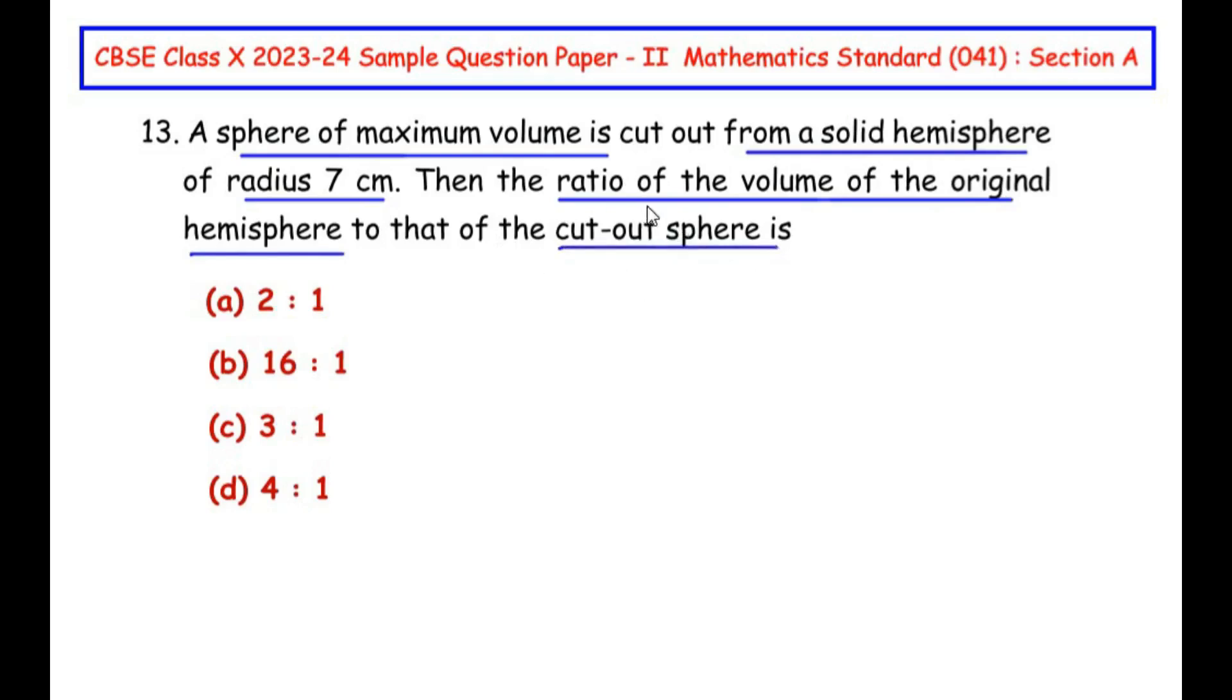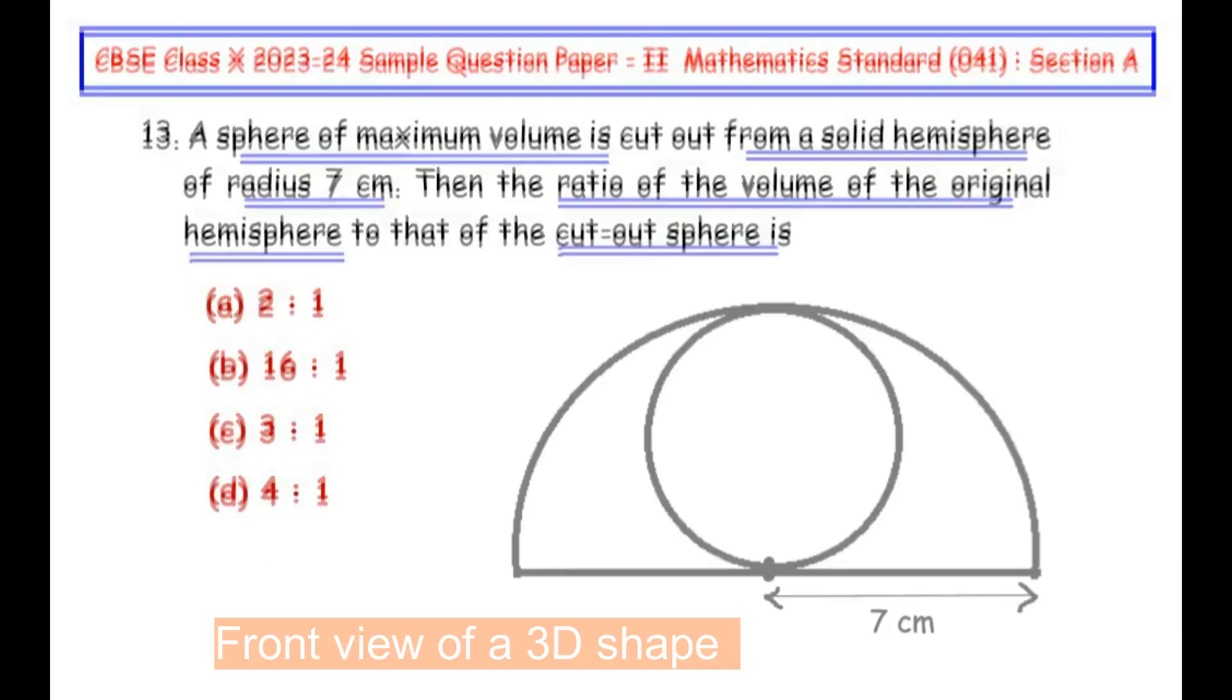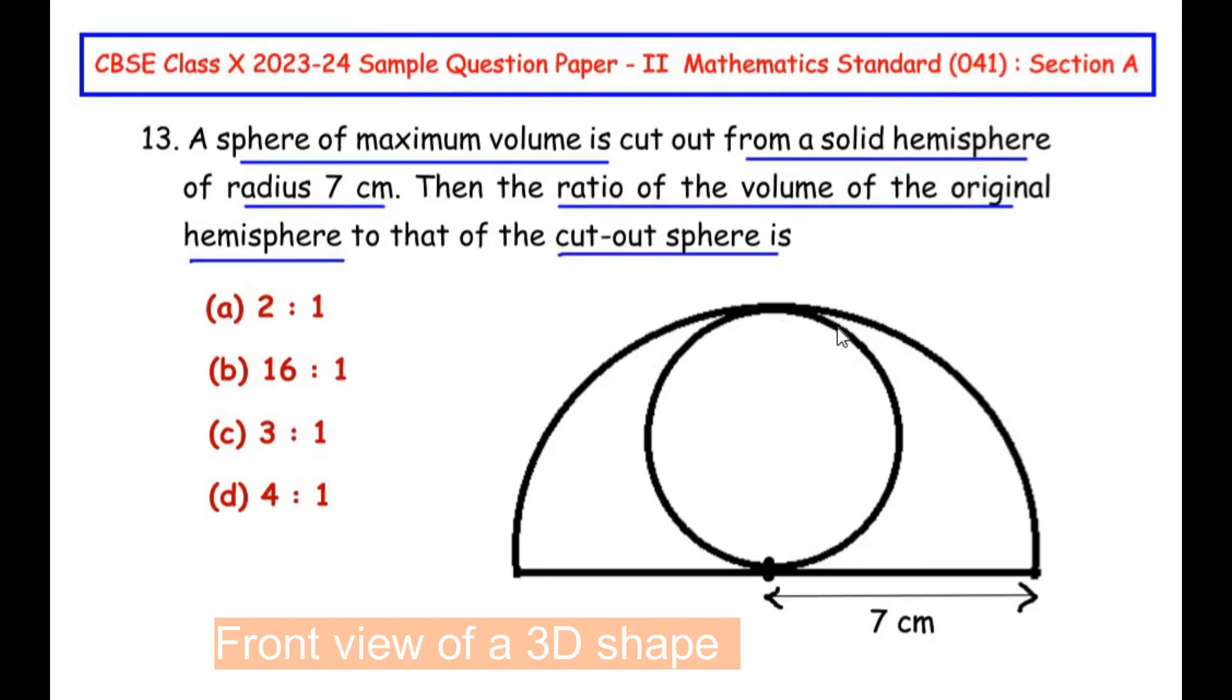Now in this question we have cut out a sphere from a solid hemisphere. So let me draw it over here. As you can see, I have drawn a hemisphere of radius 7 cm as given in the question, and a sphere of maximum volume is being cut out from this hemisphere. We have to find the ratio of the volume of the original hemisphere to that of the cutout sphere.